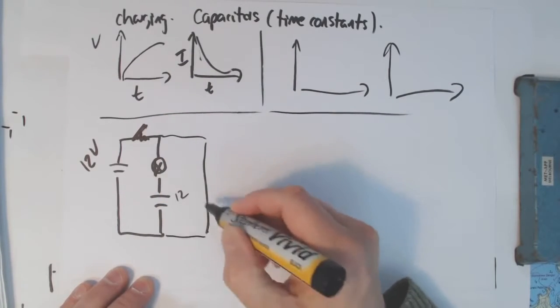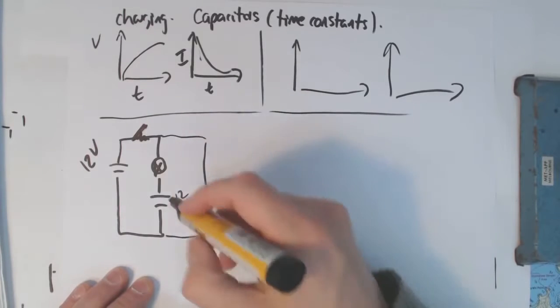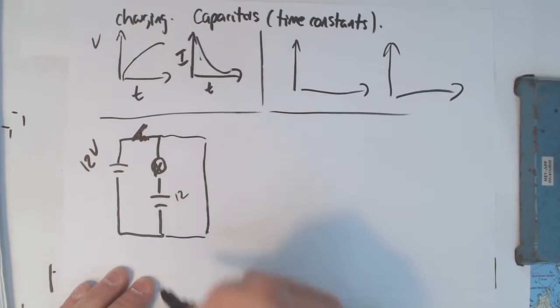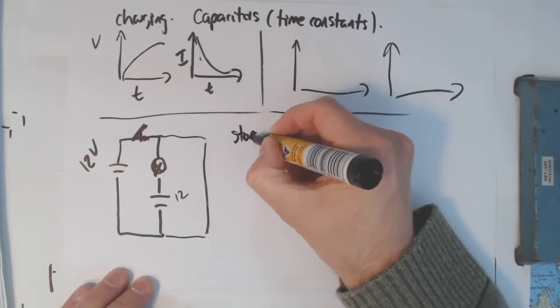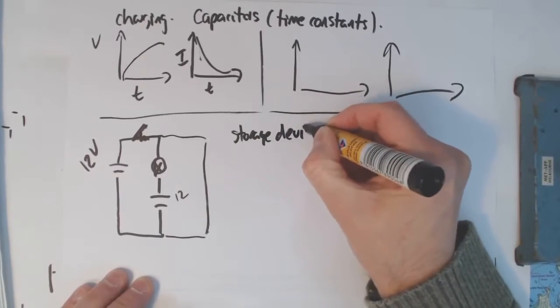If we then have it connected up so that it can discharge, then we'll get a flow of current back through the lamp as it discharges. So capacitors are great storage devices. You charge them, and then they can release their charge very quickly.